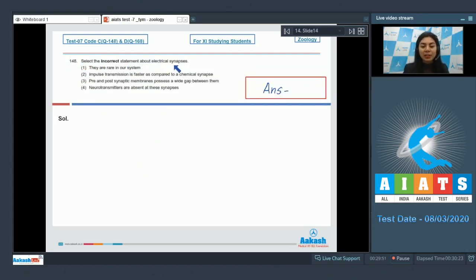Question 148: Select the incorrect statement about electrical synapses. They are rare in our system. Impulse transmission is faster compared to chemical synapse. Pre and post synaptic membranes possess a wide gap between them. Neurotransmitters are absent at these synapses.